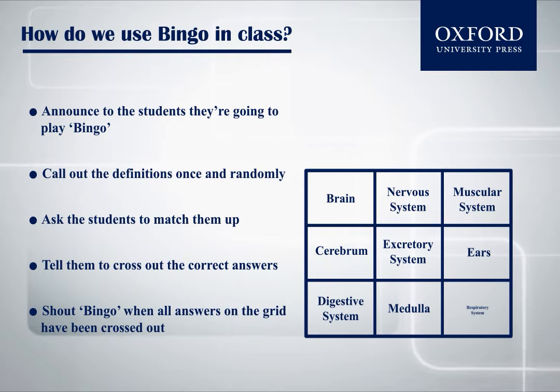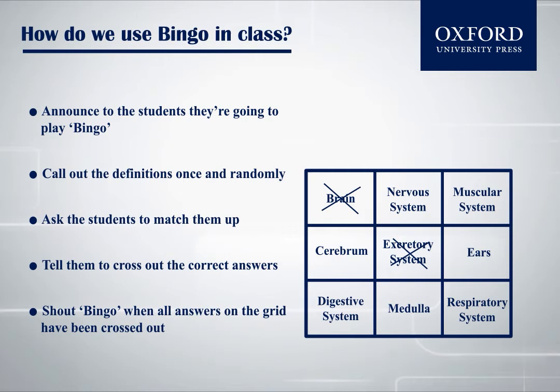This is an example of the student grid. The teacher says: 'This system gets rid of all the waste products of the body.' The student crosses out 'excretory system.' Then, the teacher says: 'This part of the body keeps the eyes clean by collecting small dirt and dust particles floating in the air.' The answer for this is 'eyelashes,' and this is not there on the student grid.